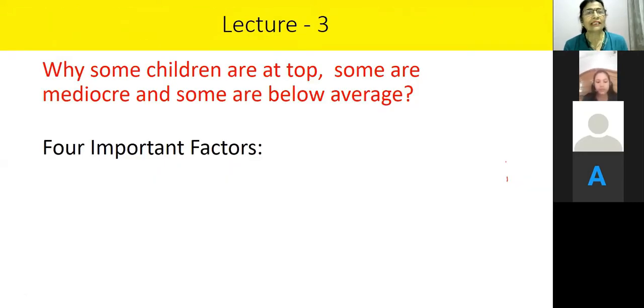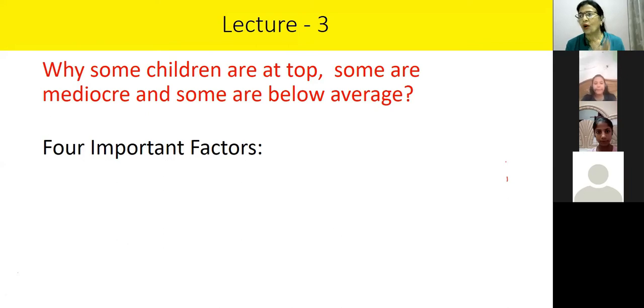Aaj ke lecture humme hum kya seekhne jah rahe hai? How we can be more and more intelligent? Every child wants to be intelligent. Every parents want their child to be intelligent, right? Learning of tables 4 and 17 ka aaj hum learn kareenge, revision kareenge, and assign work. Why some children are at top, some are mediocre and some are below average.